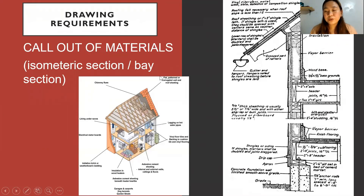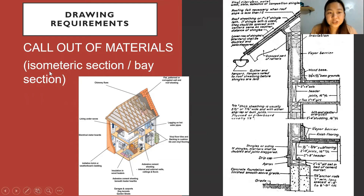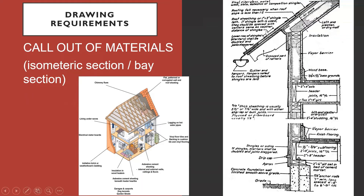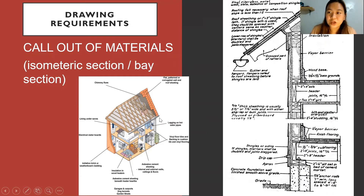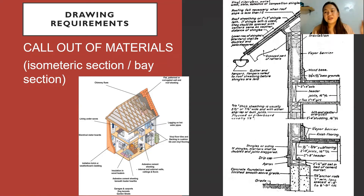These are the drawing requirements. I'm going to provide the floor plan, and you must have a call-out of materials. It can be either an isometric section or a base section with call-outs and complete details. Indicate where wood, concrete, or metal is located and what type — for example, if your column is concrete or steel, specify what kind of steel or metal is used. You can have more than one drawing.